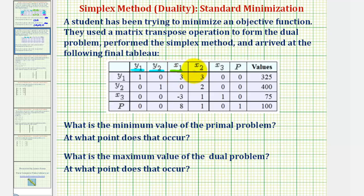And x sub 1, x sub 2, and x sub 3 would be the slack variables. But these variables would correspond to the variables used in the primal problem, or the original minimization problem.